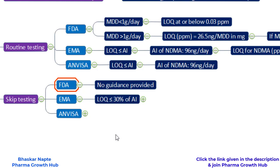To confidently declare that the content of nitrosamine is less than 30% of its acceptable intake, your method's LOQ must be less than or equal to 30% of the acceptable intake. Unless you have a test procedure with a LOQ less than 30% of the acceptable intake, you will not be able to accurately quantify whether the nitrosamine is less than or more than 30% of its acceptable intake. To get skip testing approval for the European market, your LOQ must be less than 30% of the acceptable intake.